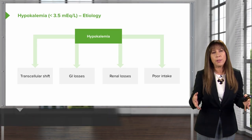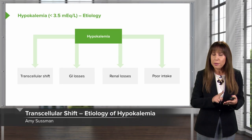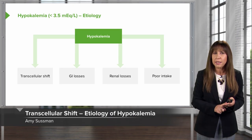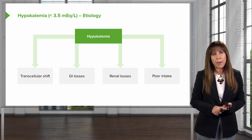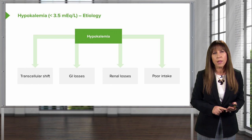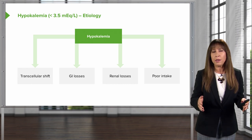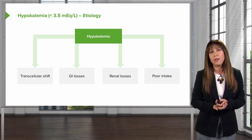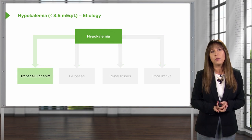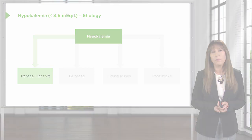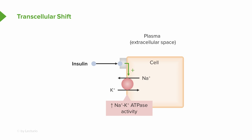We've talked about the physiology of potassium and those four factors that regulate potassium at the principal cell. Remember those as we go through our different mechanisms for hypokalemia. I like to group things into boxes — our first mechanism is transcellular shift, where potassium shifts from the extracellular fluid compartment to the intracellular fluid compartment.